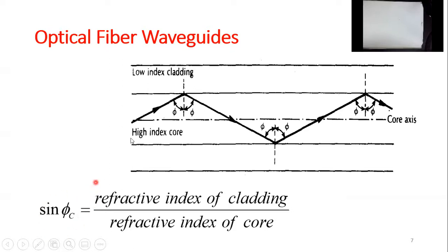So here, sin(phi_c) should equal the refractive index of the cladding N2 divided by the refractive index of the core N1. This is typically the condition. Of course, realistically you will always have losses. However, by using this total internal reflection condition you are minimizing these losses.